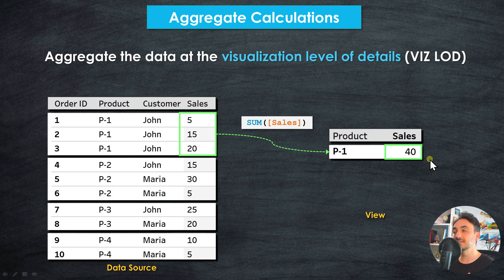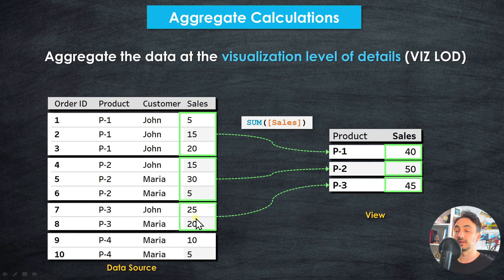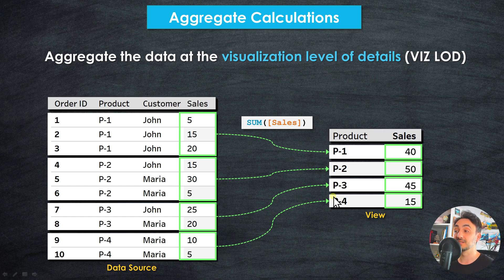The aggregate calculation groups up rows from the data source and presents them as one row at the output in the visualization. For P2 we get one row with sales summing to 50; for product three, two rows summing to 45; and for P4, one row with 15 as total sales. The level of detail depends on the dimension used in the view. That's why aggregate calculations bring data at the visualization level of detail — unlike row-level calculations where each value is computed on the same row and the number of rows stays exactly the same.